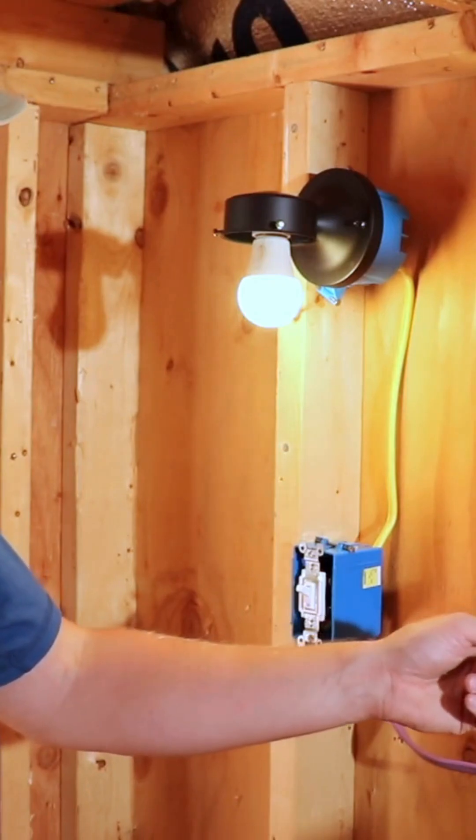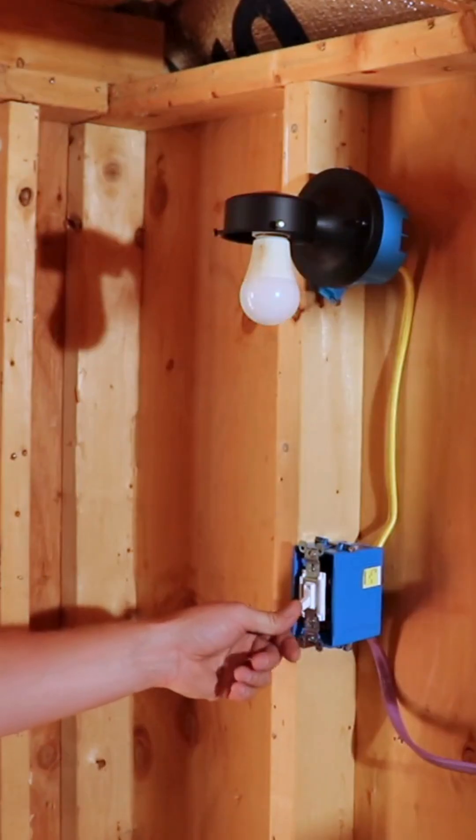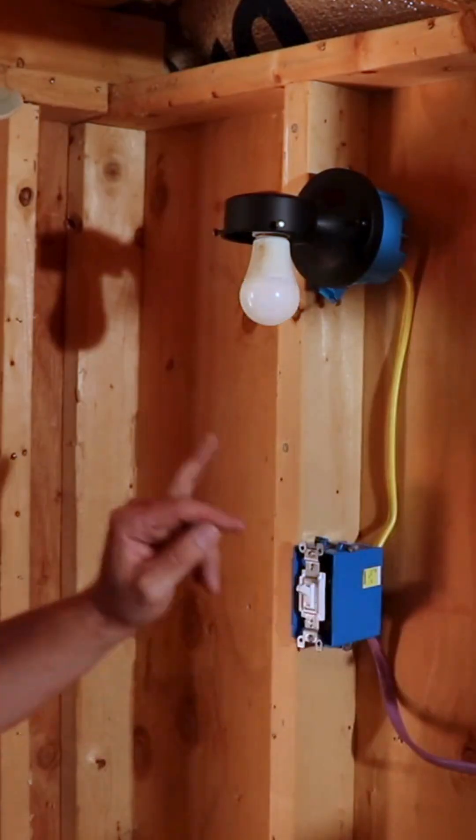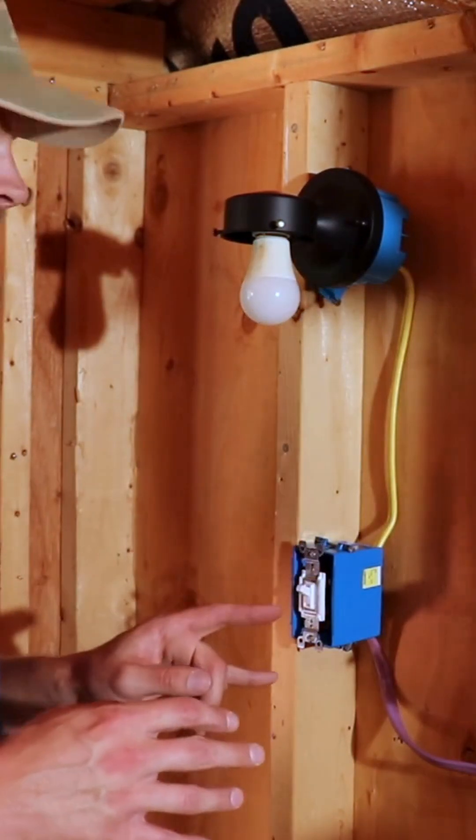If you wired up everything correctly, you should now be able to operate your light from two different locations. Now I'll also have a full-length video on how to do this, so check that out if you have any questions.